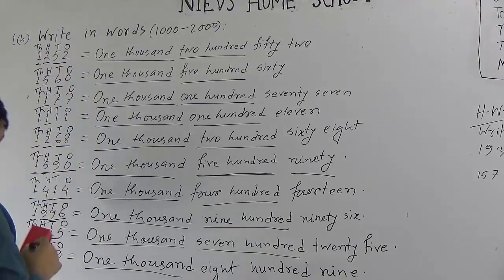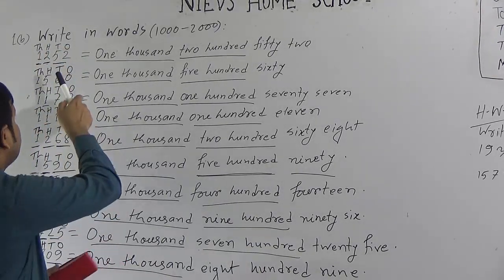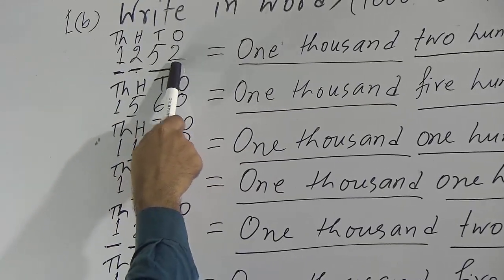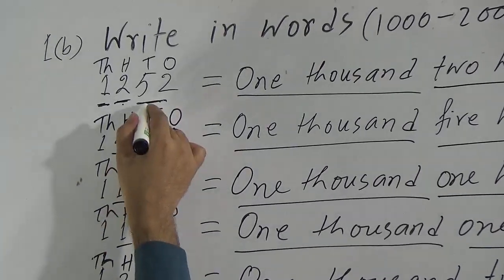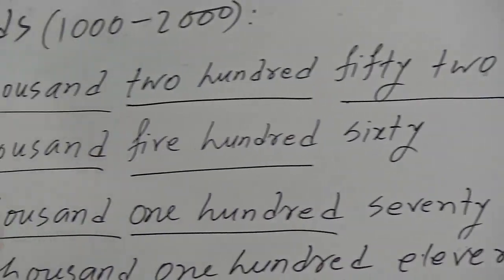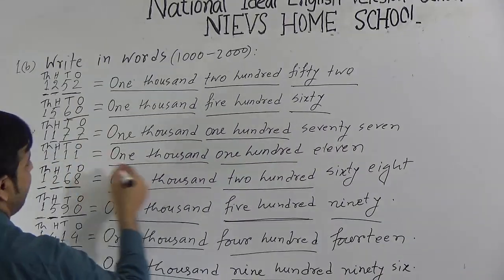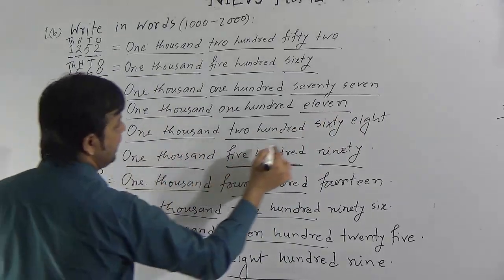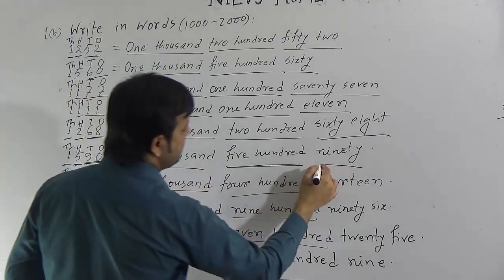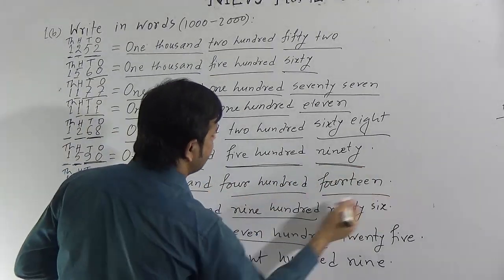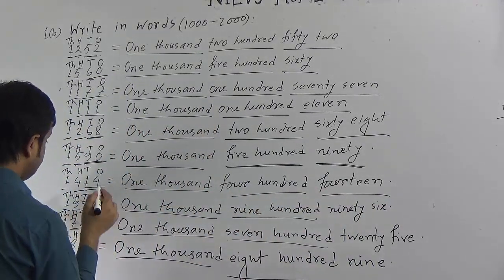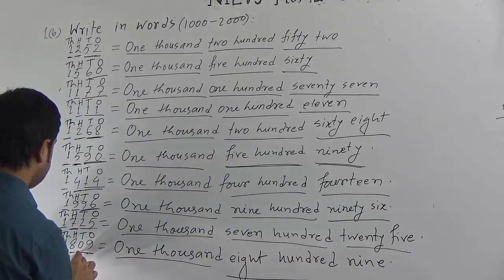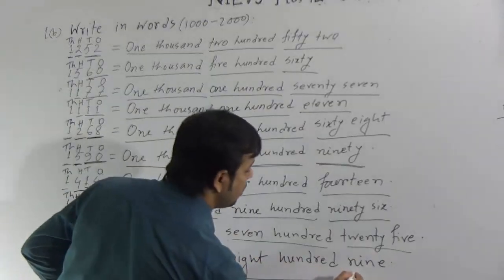The last two digits we have to read together. In the first case: 5 is in the tens position, 2 is in the ones position — so we say 52. Then 60, then 77, then 11, then 68, then 90, then 14, then 96, then 25. And the last one: 0 and 9 — that means only 9 here.